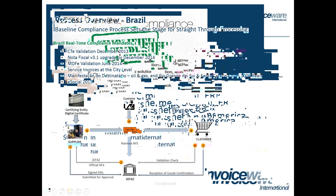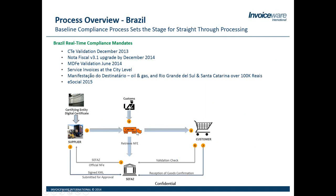Brazil is by far the most complicated country. The first thing to be aware of is CTE — these are transportation invoices. If you're paying freight charges or getting a bill from a third-party logistics company, you need to be collecting the CTE XML, validating it, and storing it at a minimum. Whenever we talk about inbound in these countries, there's a minimum requirement of collection, validation, and archiving, but also driving business process off of it — for example, freight payables matching inside of the SAP system. But that's often overlooked; sometimes these documents are not even collected.